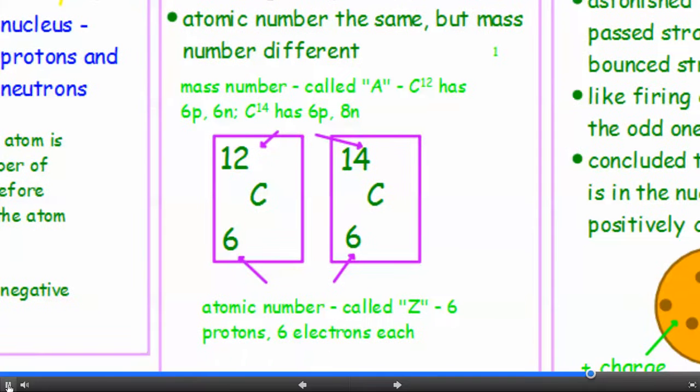So here's an example of two isotopes of carbon. There's carbon-12 and carbon-14. So the mass number, the top number there, called A. Now carbon-12 has six protons and six neutrons, so it has a mass of 12.